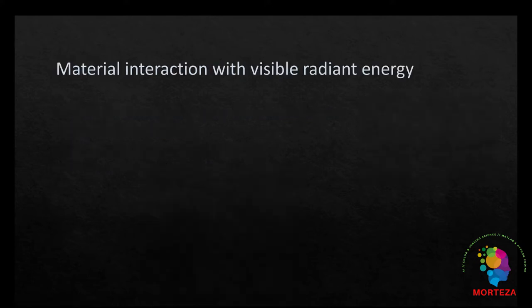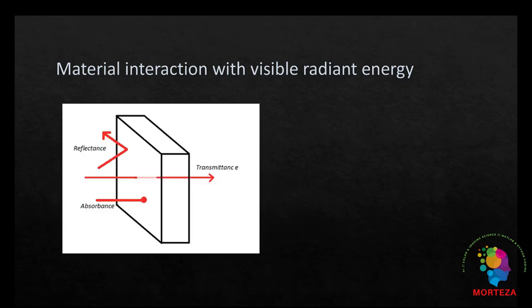Once light source or illuminant is specified, the next step is the characterization of the material interaction with visible radiant energy. The interaction of the radiant energy with materials obeys the law of conservation of energy. The radiant energy when hitting an object can either be absorbed or reflected or transmitted.